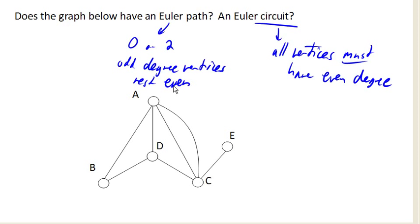Now, the reason it's okay to have 2 odd degree vertices is because with an Euler path, we don't have to get back to our starting point.